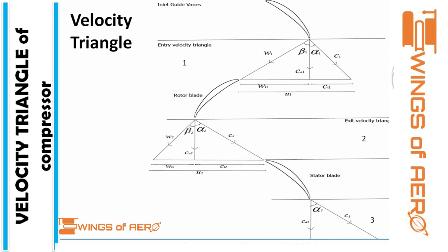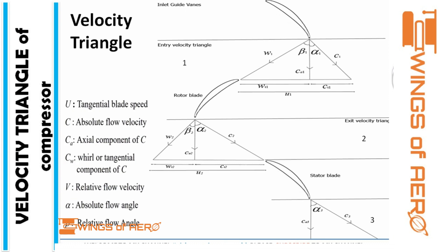Now I will describe the nomenclature of the velocity triangle. First, U is the tangential blade speed or blade velocity. For an axial compressor, the blade speed U remains constant across all stages.